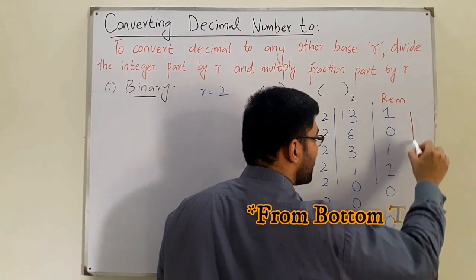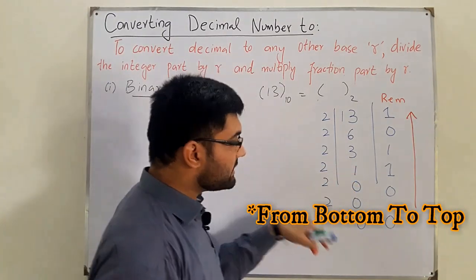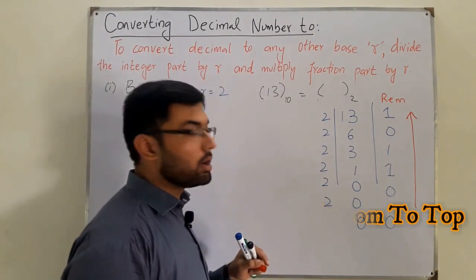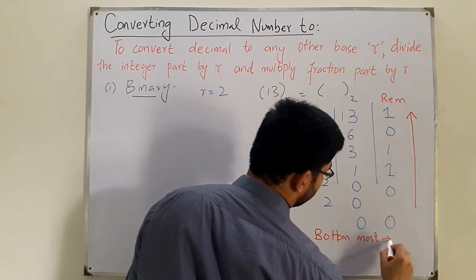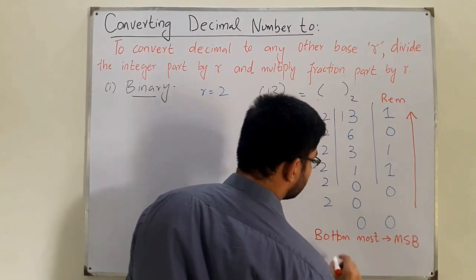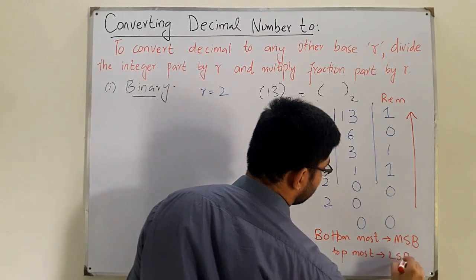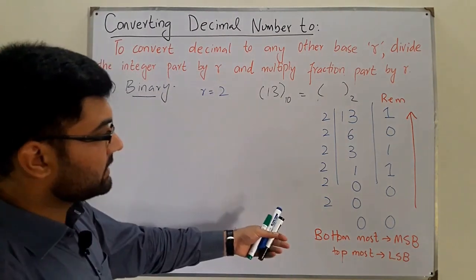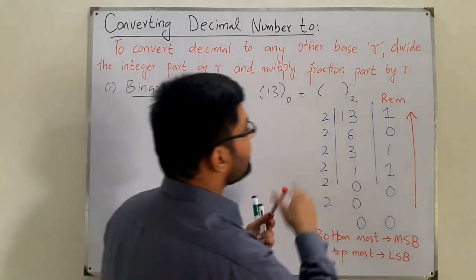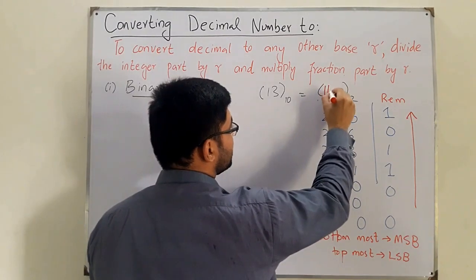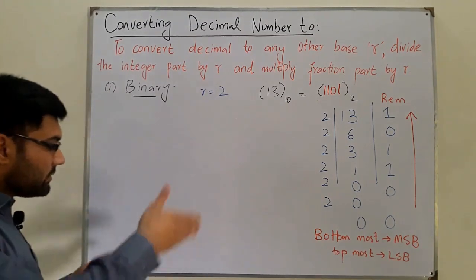The binary equivalent is read from bottom to top. The bottom-most remainder is your Most Significant Bit (MSB) and the top-most is your Least Significant Bit (LSB). Zeros to the left don't matter, so starting from the first 1, the binary equivalent of 13 is 1101.